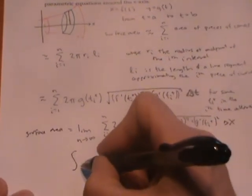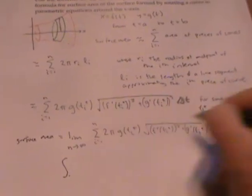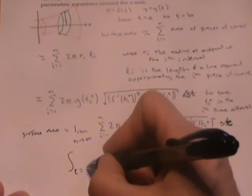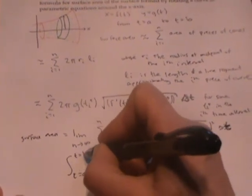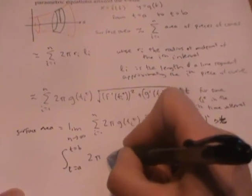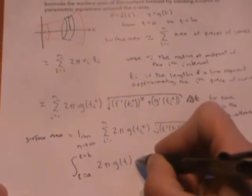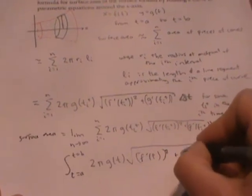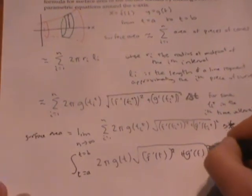And the limit of the Riemann sum is going to be the integral from t equals a to t equals b of 2πg(t) times the square root of f'(t)² plus g'(t)² dt.